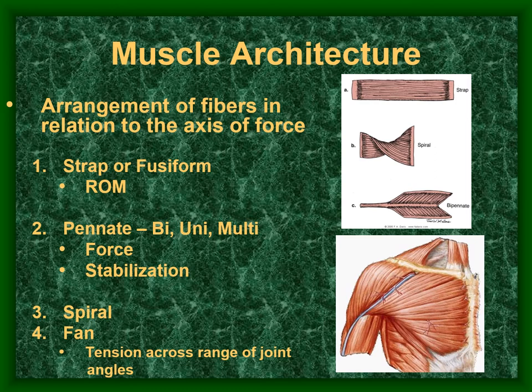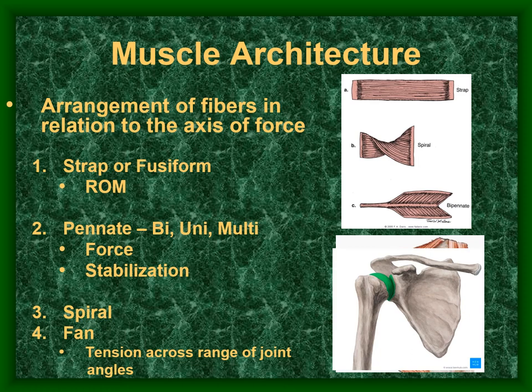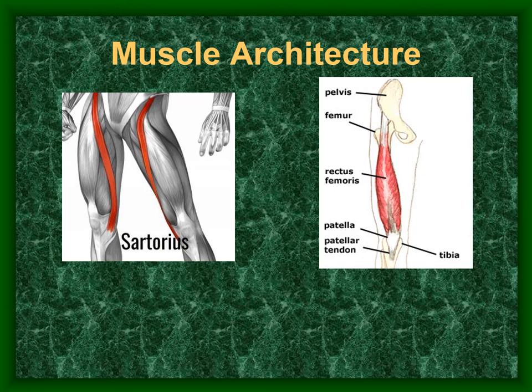Some muscles spiral, which is determined by where they need to insert rather than their function. Fan-shaped muscles are particularly interesting — they can provide tension across a large variety of joint angles, which is why they tend to surround ball-and-socket joints, the most mobile joint type.